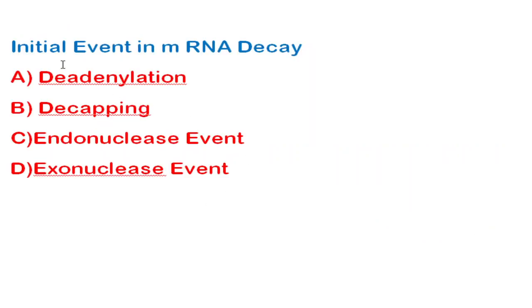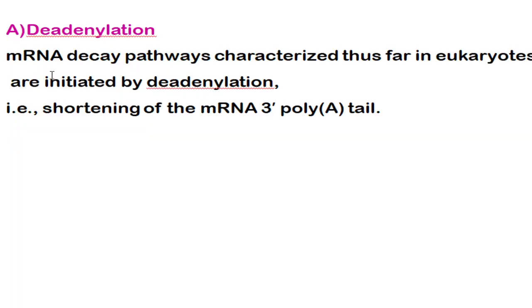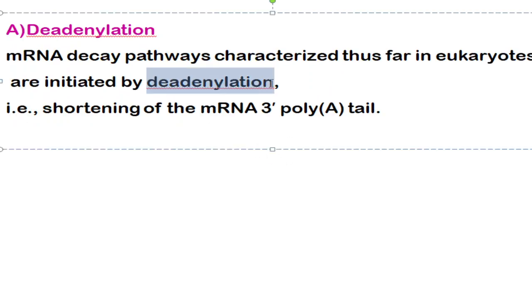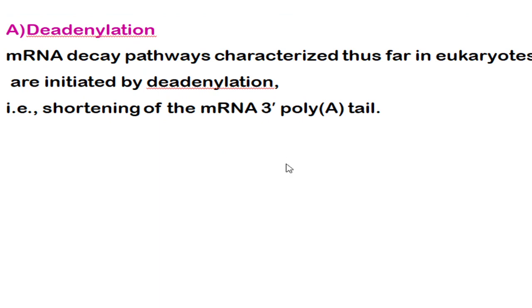The next question concerns the initial event in mRNA decay. The correct answer is deadenylation. The mRNA decay pathway is initiated by deadenylation, followed by decapping. Deadenylation refers to the degradation of the mRNA 3' poly-A tail.